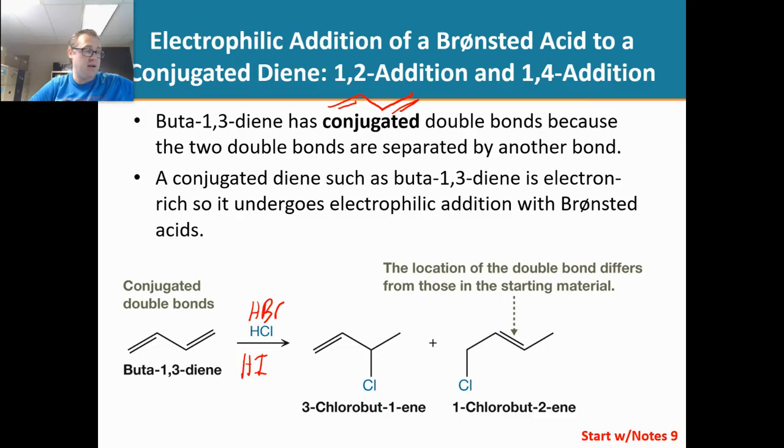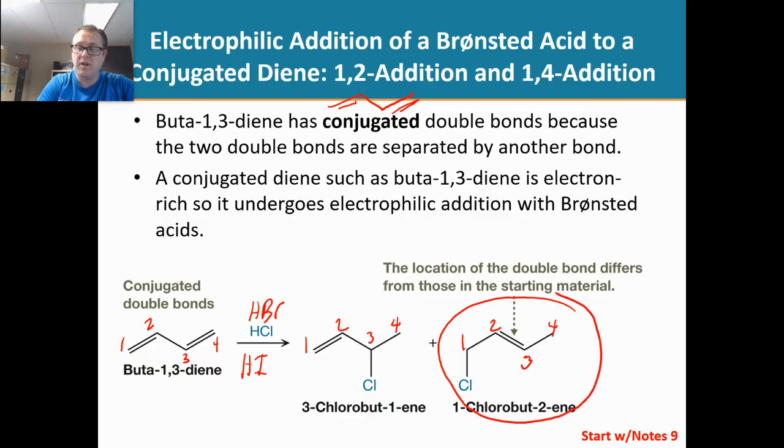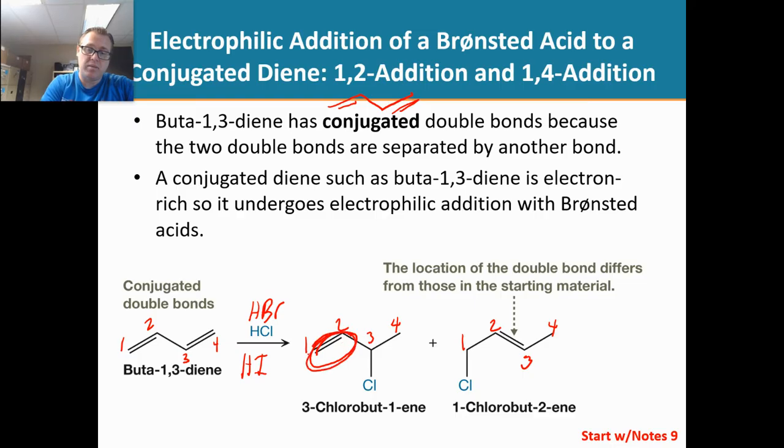So if we number these here, if we number the starting material, we can see that in this molecule here, chlorine was added to carbon-3, whereas the molecule on the far right, chlorine added to carbon-1. We also notice that the double bond is that double bond. But in the product on the far right, the double bond is now moved on us, which is quite interesting. So that's the overall reaction. We're going to get two products when we do this addition reaction with a diene.